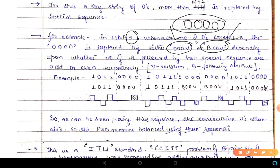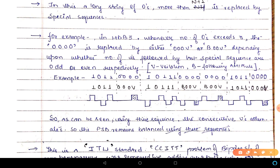The question is when to use '000V' and when to use 'B00V'. The decision is made by a rule: for the first occurrence we can use either. After that, if the number of ones following the special sequence is even, we use 'B00V'. If the number of ones following the special sequence is odd, we use '000V'.